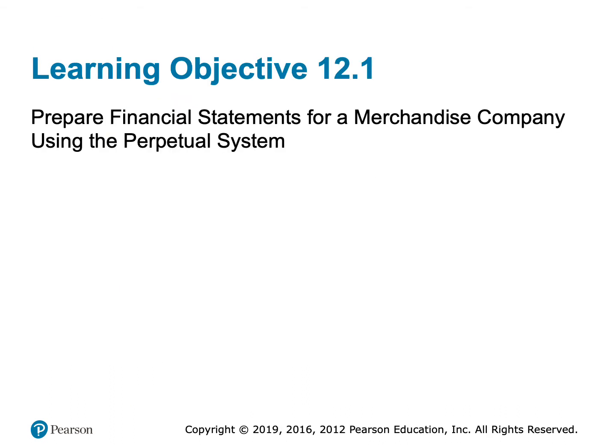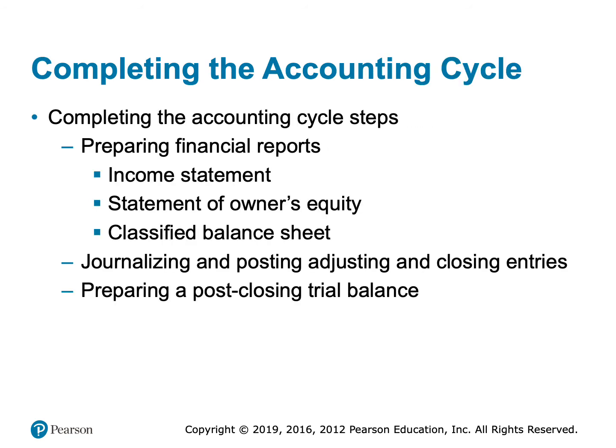We're going to continue picking up right where we left off in chapter 11 with that completed worksheet. Now we're going to take those next steps to prepare the financial statements for a merchandise company using a perpetual inventory system. We have our three financial statements: the income statement, the statement of owner's equity, and the classified balance sheet. Those have to be prepared in order. Then we have to journalize and post those adjusting and closing entries. We already did the adjusting entries on the worksheet, but we actually have to journalize them and post them to the T accounts. And then we'll prepare that post-closing trial balance.